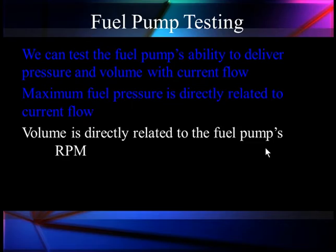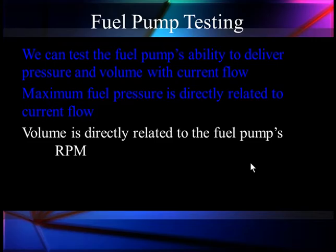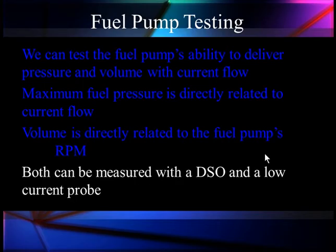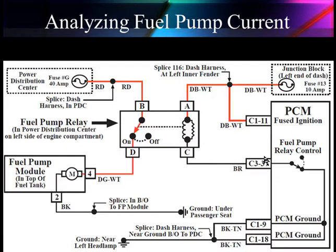The volume is directly related to the pump's RPM. When we can't get enough power — which is voltage and current — into the pump, we can't get enough RPM. So the maximum pressure and the maximum volume are tied very closely together. We can't get full pressure or full RPM if we can't get full current flow, and the volume is directly related to RPM. We can test these two things with a lab scope — a DSO and a low current probe.